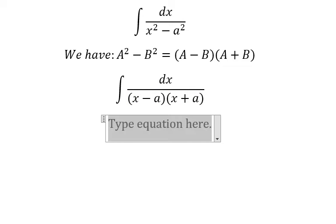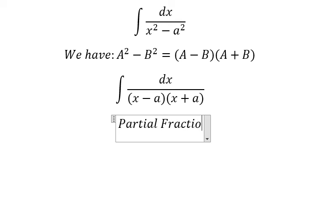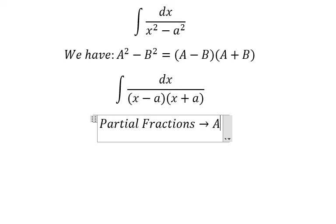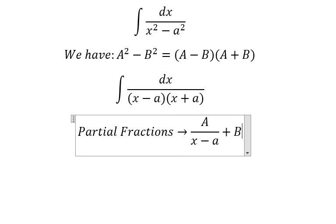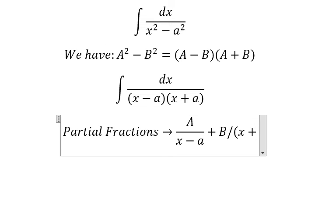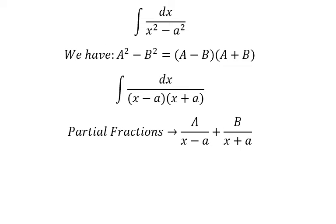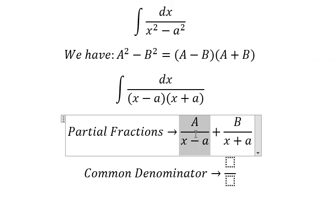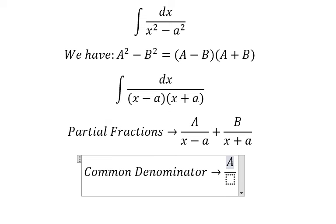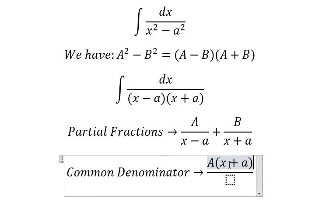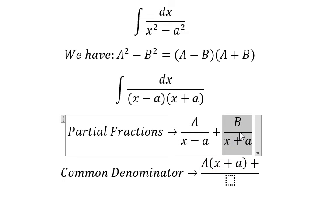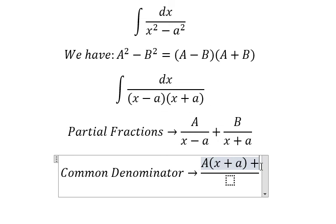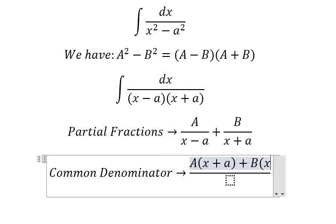Next, we can use partial fractions. So I will put A over (s minus a) and B over (s plus a). Now we do common denominator. This one is missing (s plus a), so capital A multiplied by (s plus a); this one is missing (s minus a), so capital B multiplied by (s minus a).